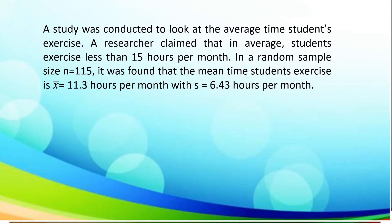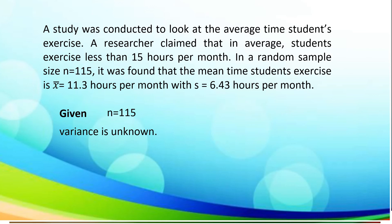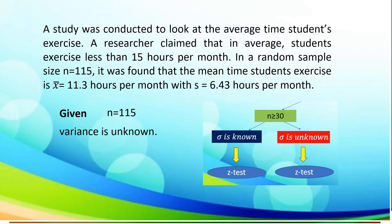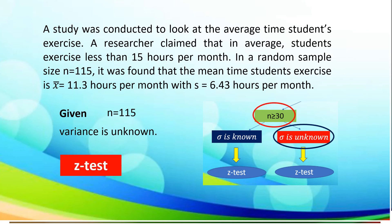Let's try the last one. A study was conducted to look at the average time students exercise. A researcher claimed that on average, students exercise less than 15 hours per month. In a random sample of 115, it was found out that the mean time students exercise is 11.3 hours per month, with a standard deviation of the sample of 6.43 hours per month. The number of samples is 115, which is greater than 30, and the variance is unknown. Since the given sample standard deviation comes only from the sample and the number of samples is greater than 30, referring to our diagram, we are going to use z-test.